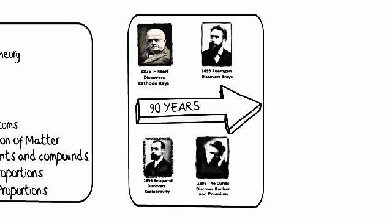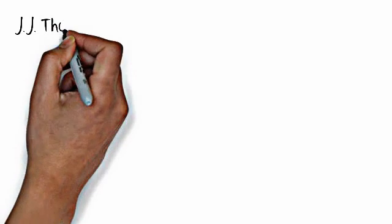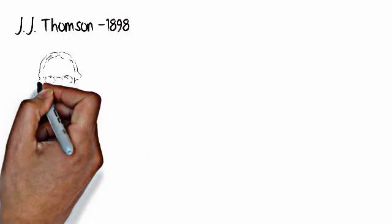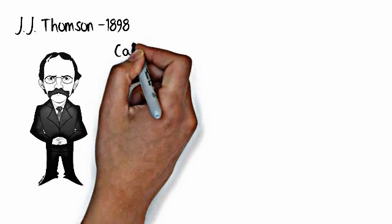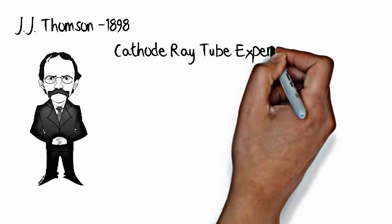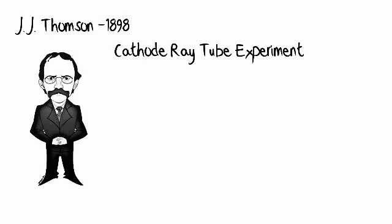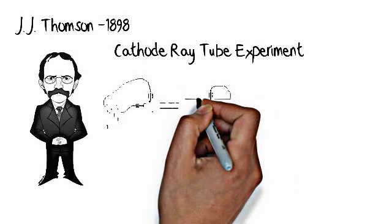So to say that nothing happened in that 90 year time frame wouldn't be exactly accurate. There's a lot of really important science that went on during that time frame. But the next major scientist that you're really responsible for knowing is JJ Thompson. And JJ Thompson in 1898